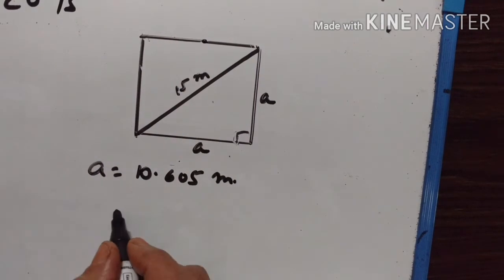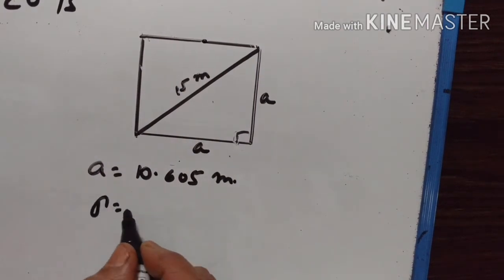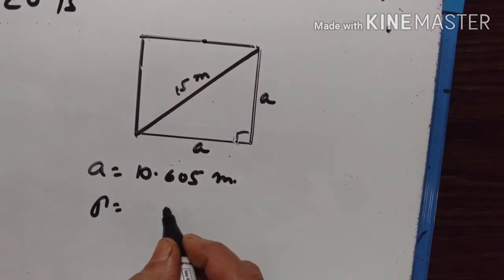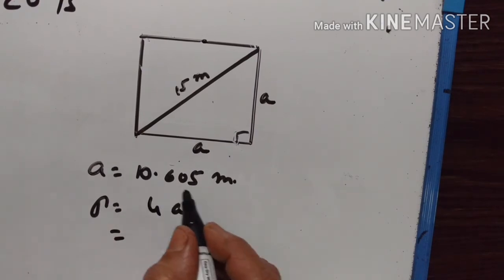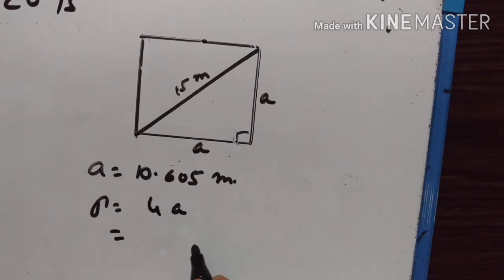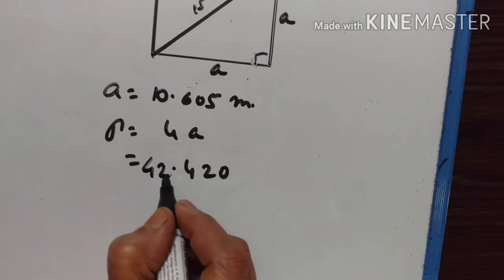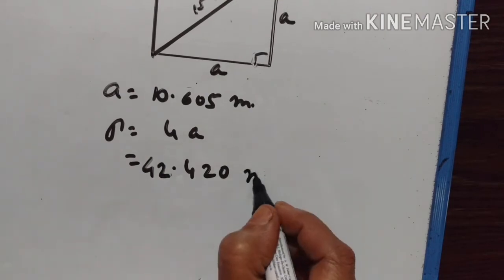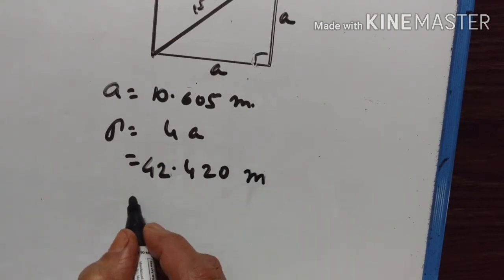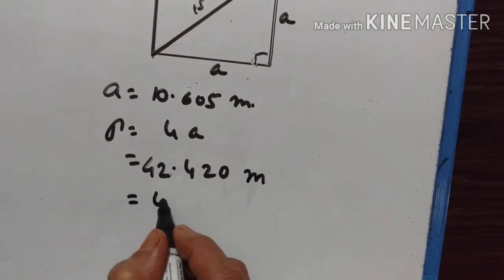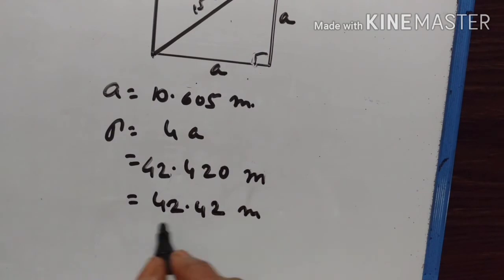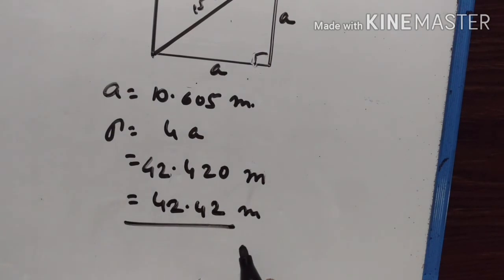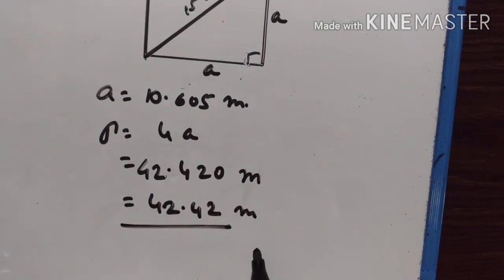So the perimeter is equal to 4a. That is 4 into 10.605, which gives us 42.42 meters. That is the perimeter.